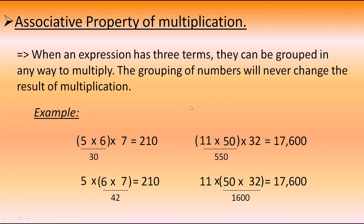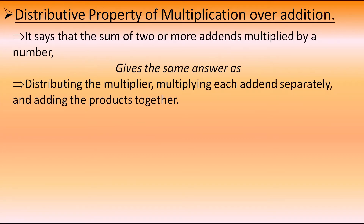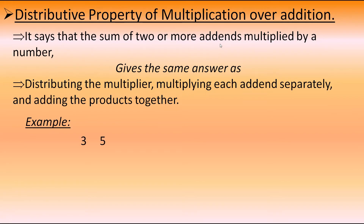Now let's move to the next property: distributive property of multiplication over addition. It says that the sum of two or more addends multiplied by a number gives the same answer as distributing the multiplier, multiplying each addend separately, and adding the products together. This is a bit complicated, so let's take an example. Taking two numbers 3 and 5 as addends, multiplied by 7: first, 3 plus 5 equals 8, and 8 into 7 gives 56.